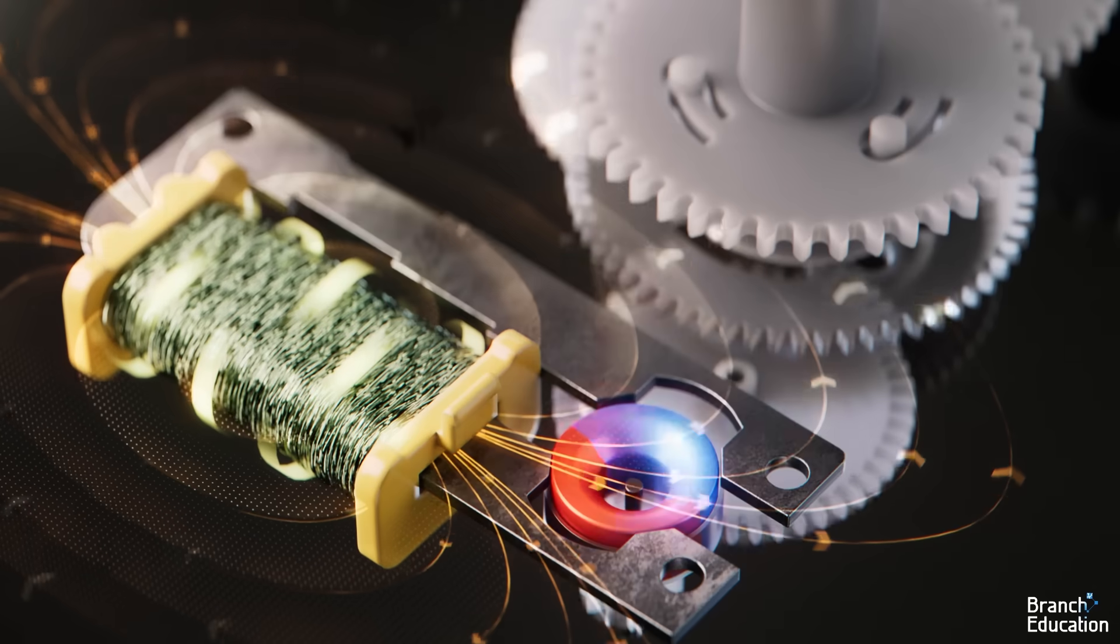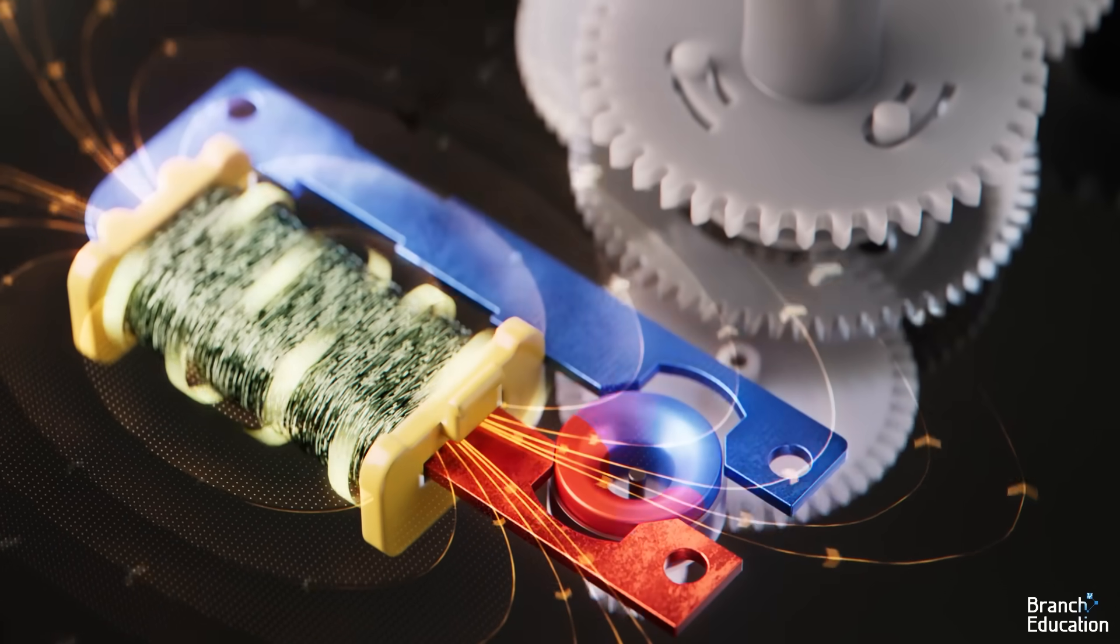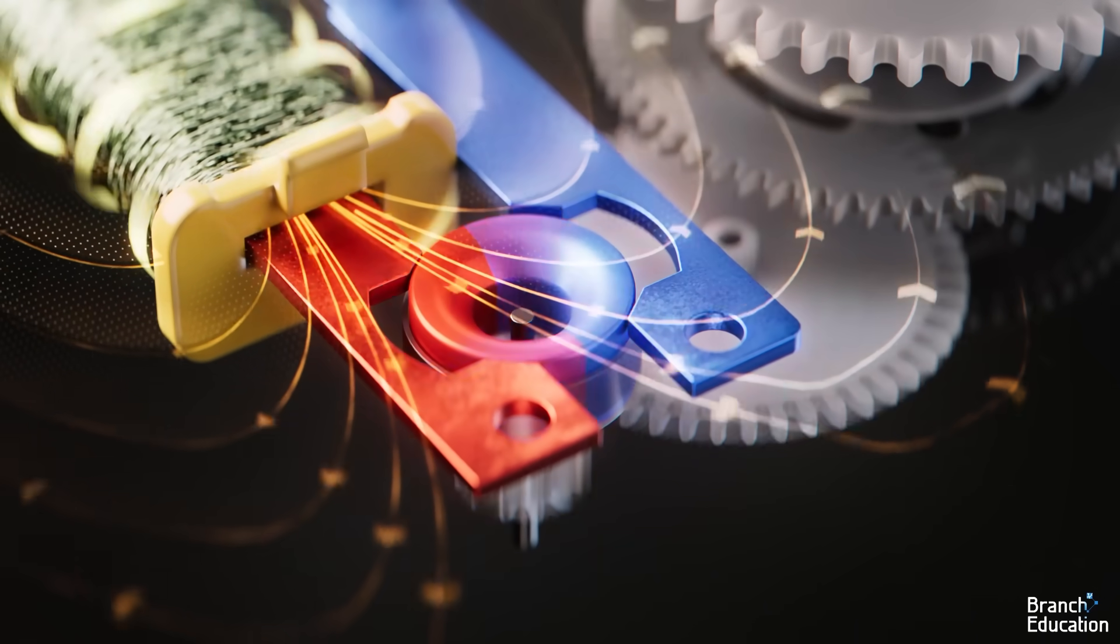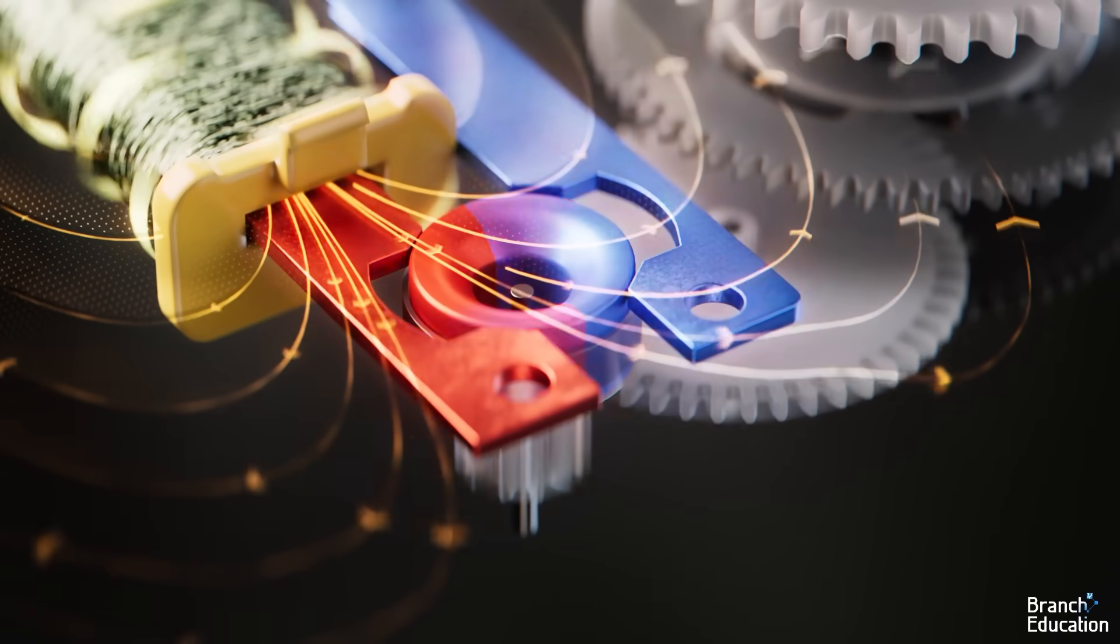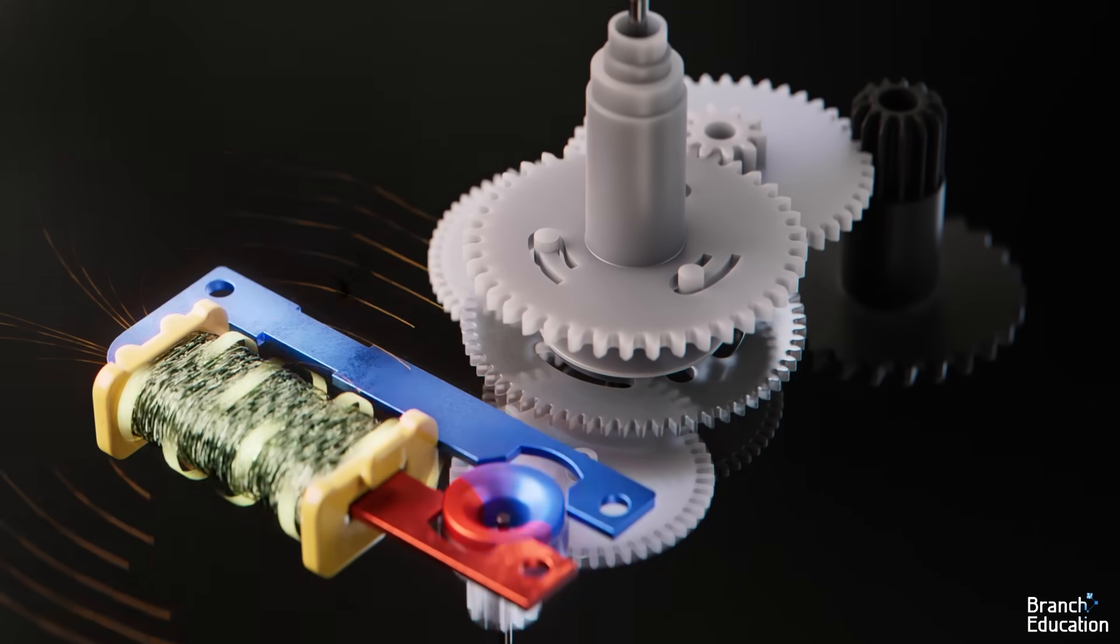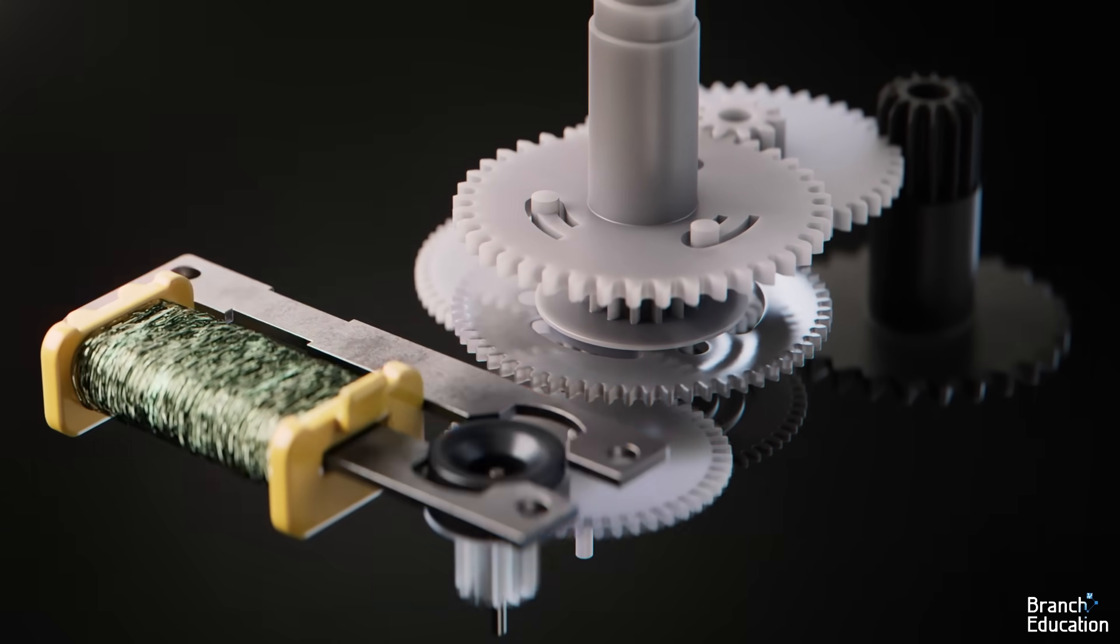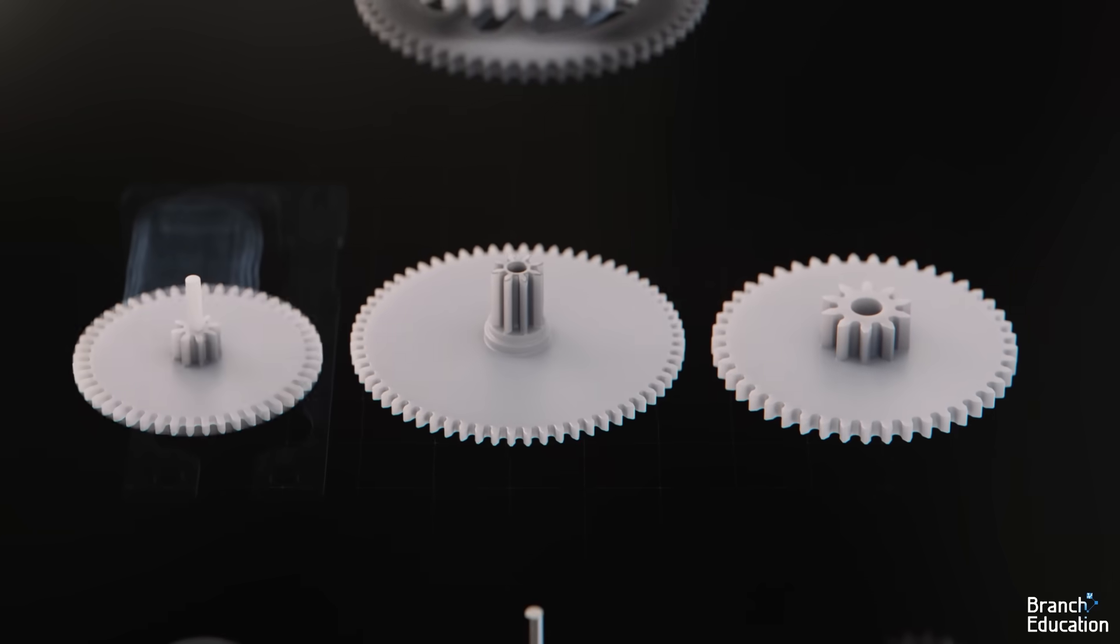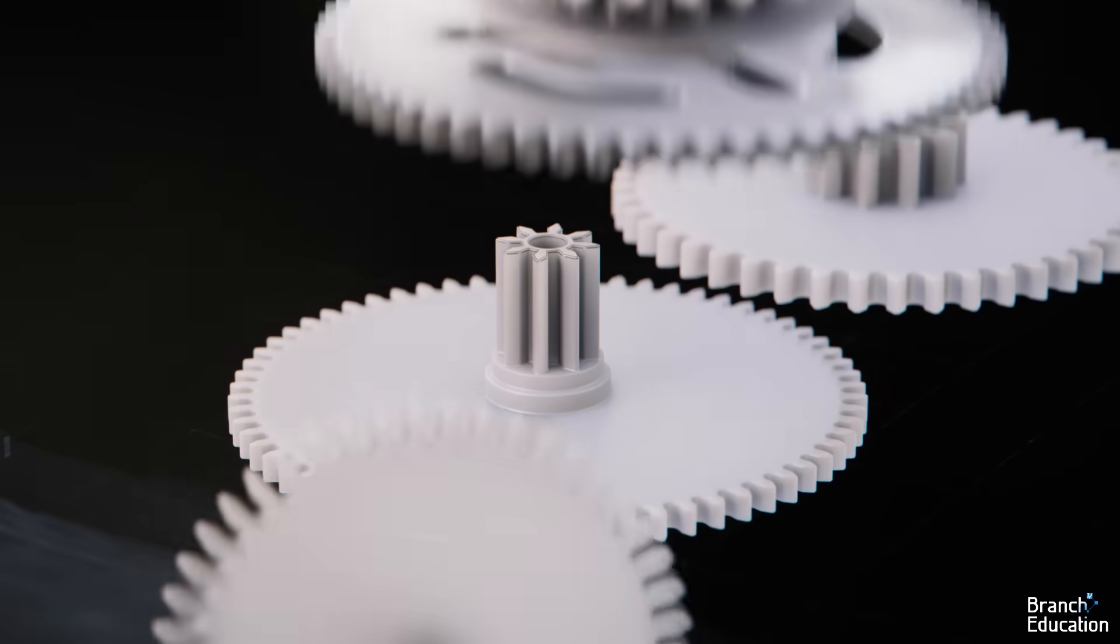Every second, the electromagnet switches directions, thus causing the magnet inside the driver gear to rotate 180 degrees in order to align its permanent magnet with the fields produced by the electromagnet. Therefore, the driver gear rotates fully around once every two seconds. Most of the gears in the gear train are composed of compound gears, each of which has two different gears, one on top of the other.